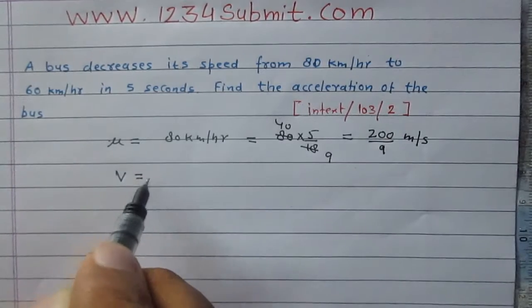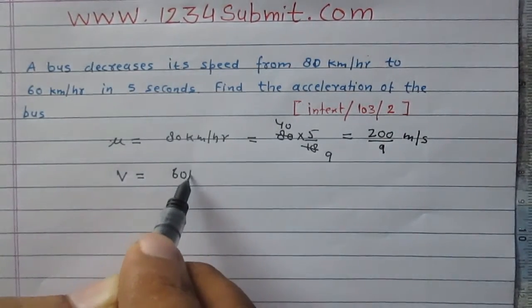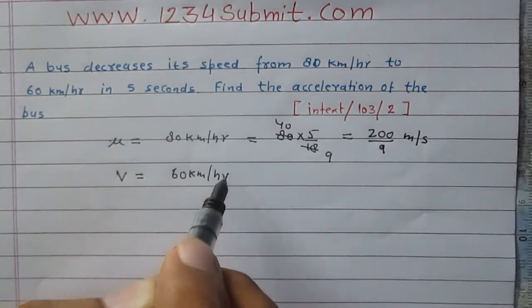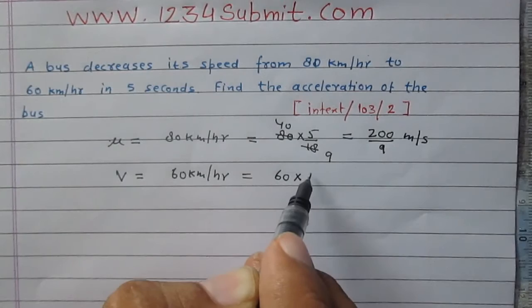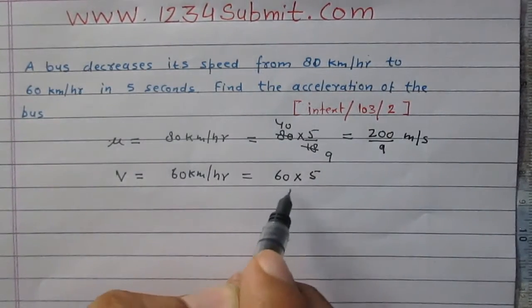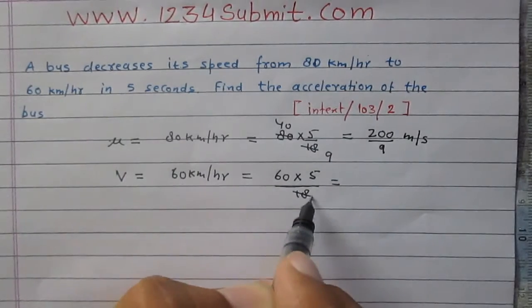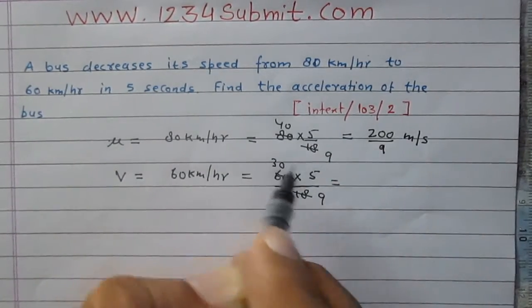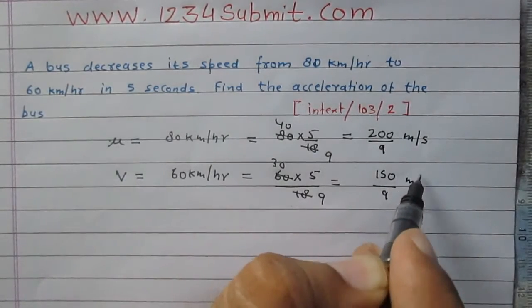Final speed after 5 seconds is V. It is 60 km per hour. 60 km per hour is 60 multiplied by 5 and divided by 18 meters per second. So it is 150 upon 9 meters per second.